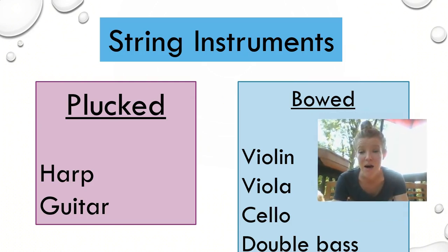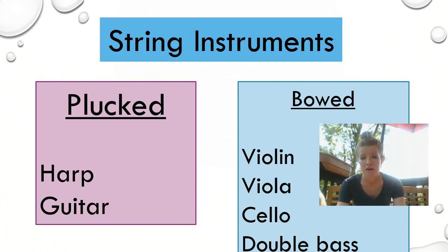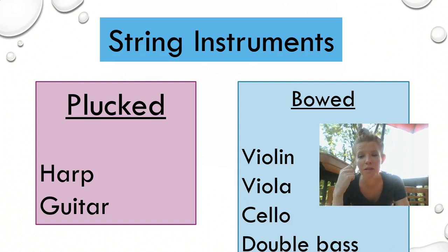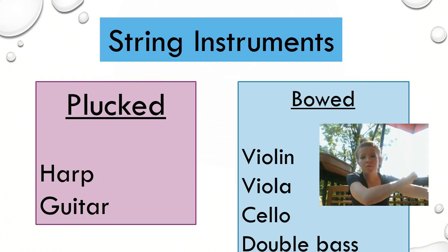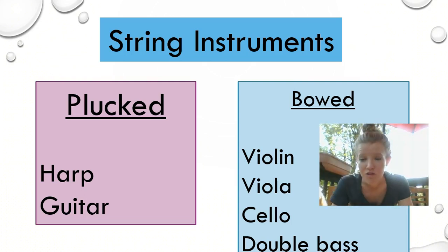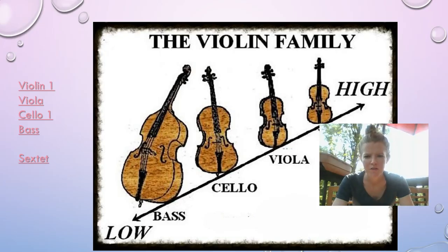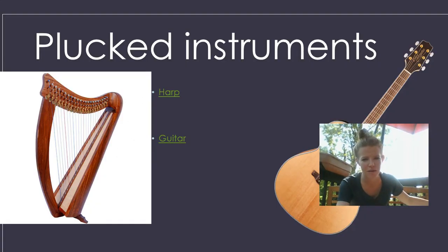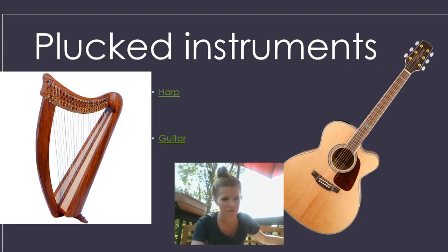String instruments can be divided into plucked and bowed, meaning how are we playing the instrument. If you think of a harp, someone is sitting down using their fingers and plucking the strings. If you're playing a guitar, you might be strumming or plucking the strings. If you're playing a violin, however, you're using a bow, drawing it across the string, causing the string and bow to vibrate and create the sound. There is an accompanying sheet with links so you can listen to all of these instruments as we go along.